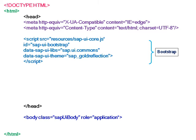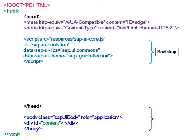In the body section, we mention the class SAP UI5 body with a div, and for the div the id mentioned is content. This entire body section is called the User Interface area.